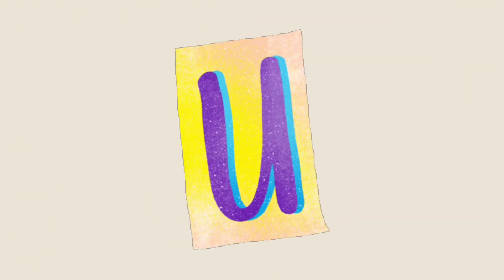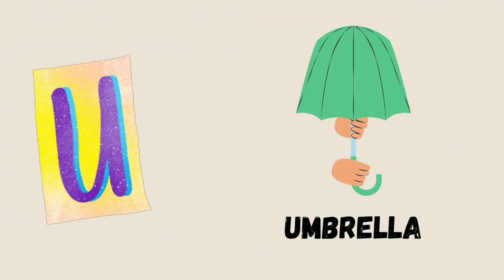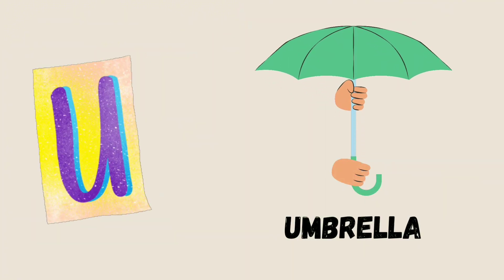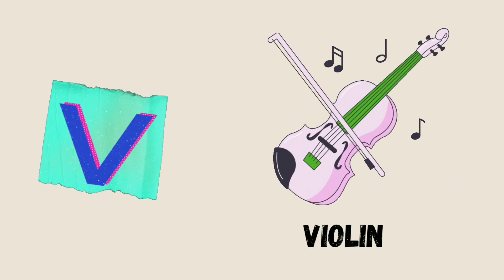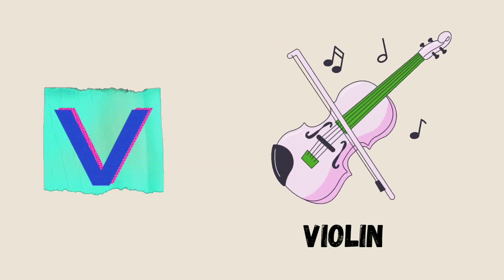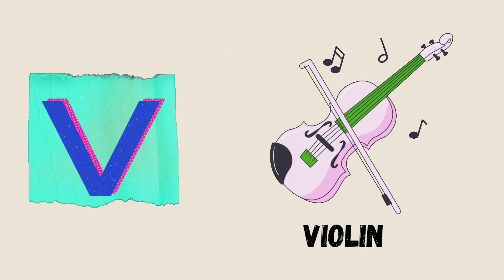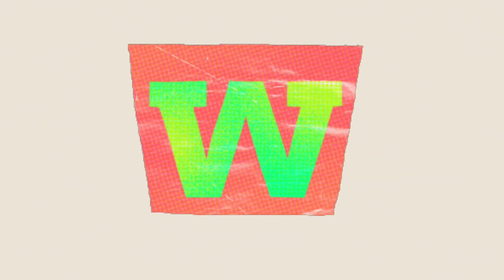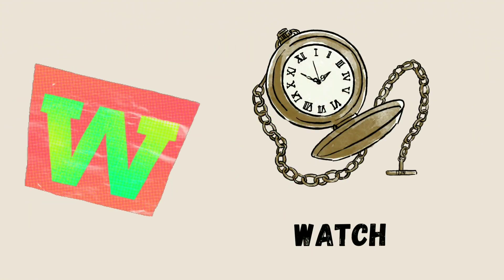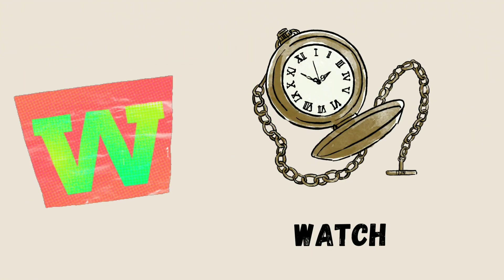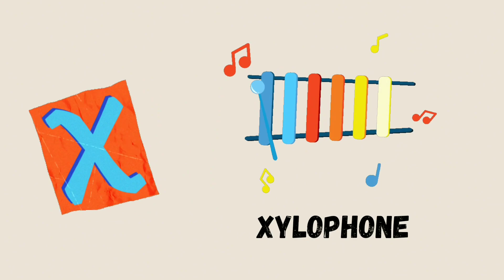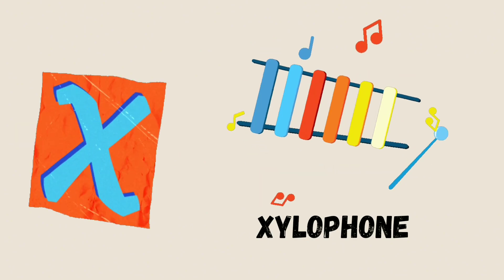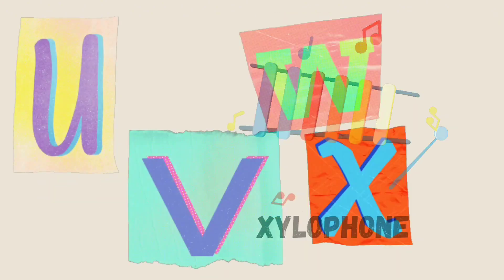U is for Umbrella, U-U-Umbrella. V is for Violin, V-V-Violin. W is for Watch, W-W-Watch. X is for Xylophone, X-X-Xylophone.